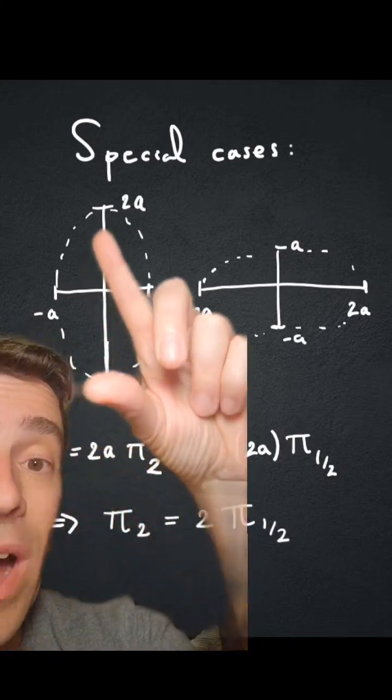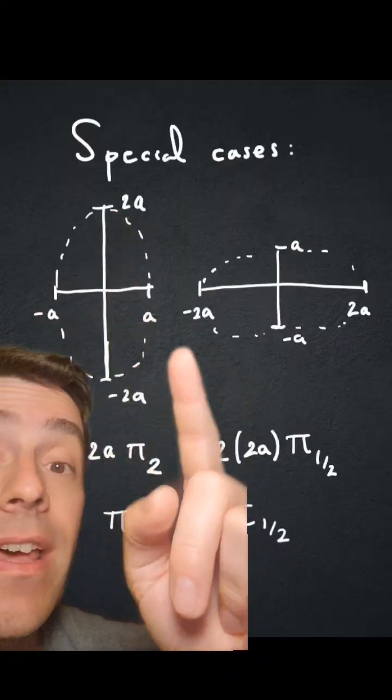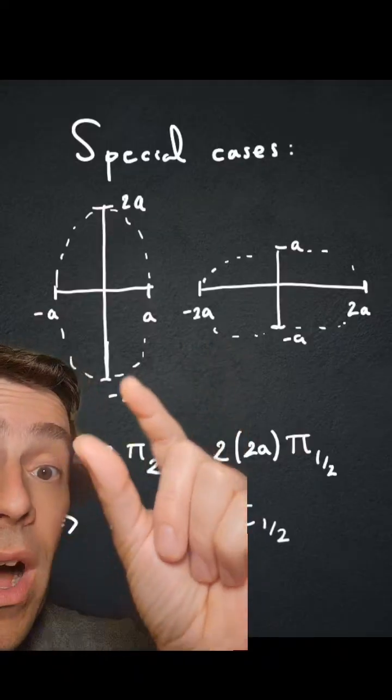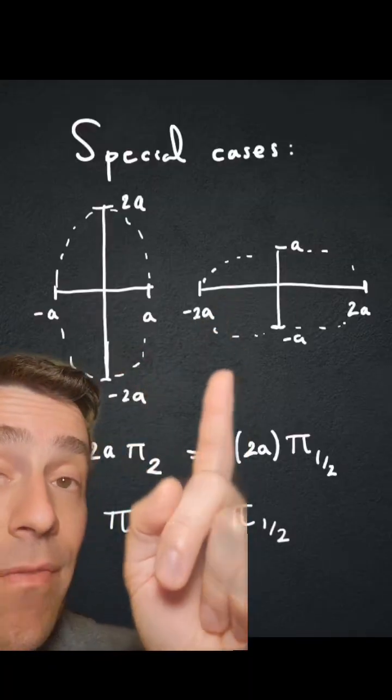When you have an ellipse that is twice as tall as it is wide, so b is 2a, then you could turn it 90 degrees and get an ellipse that is twice as wide as it is tall, meaning that b is half of a.